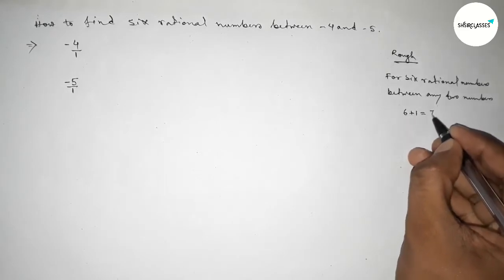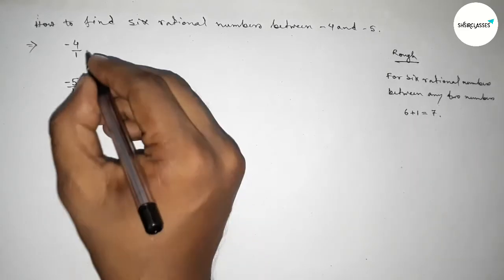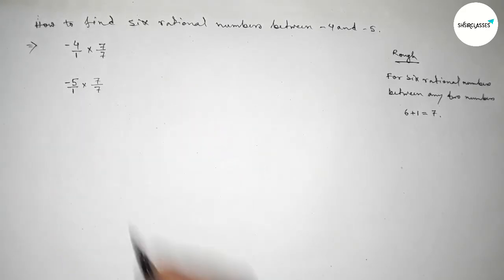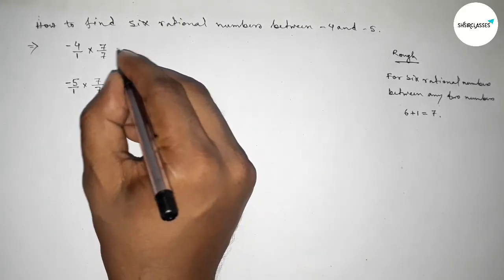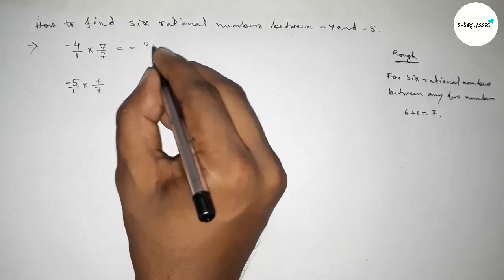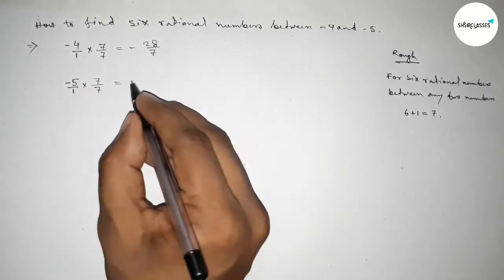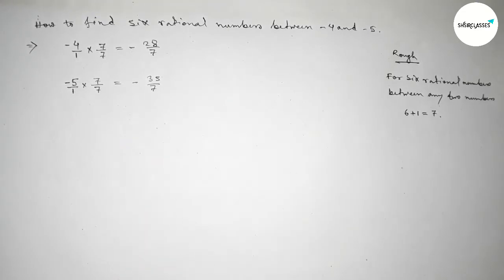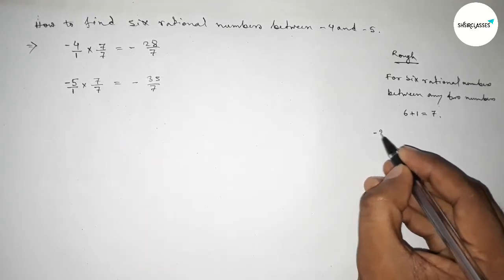So multiplying by 7 with both numbers by this way, we get equal to minus 28 over 7 and here minus 35 over 7. Now between minus 28 to minus 35, we can get 6 negative integers.